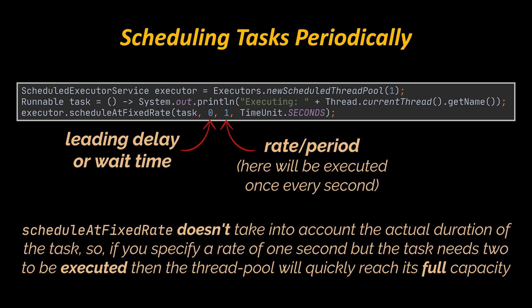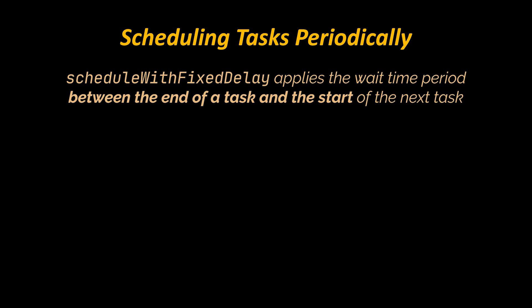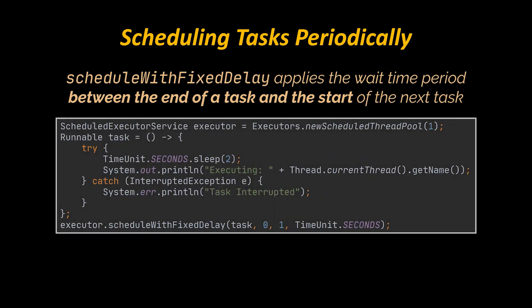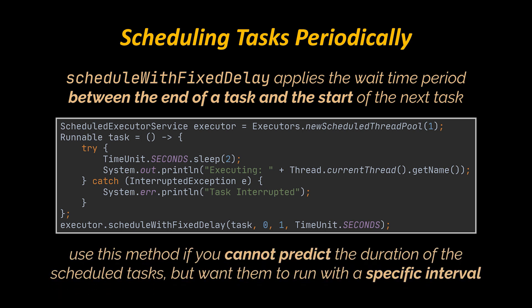Keep in mind that scheduleAtFixedRate doesn't account for the actual duration of the task. If you specify a rate of one second but the task takes two seconds to execute, the thread pool will quickly reach full capacity — in that case you should consider using scheduleWithFixedDelay instead. The difference is that the wait time period applies between the end of one task and the start of the next. For example, with a fixed delay of one second, an initial delay of zero, and a task duration of two seconds, the execution intervals will be at zero, three, six, nine seconds and so on. This method is useful when you cannot predict the duration of tasks but want to maintain a specific interval between them.